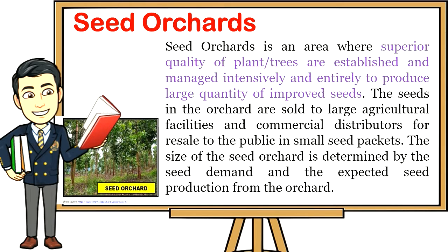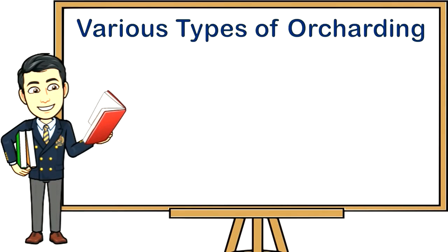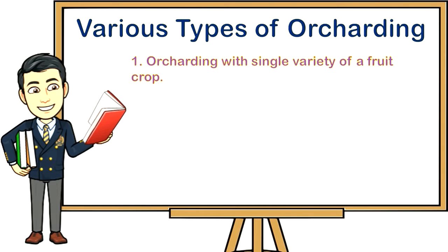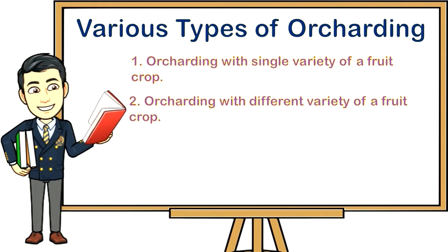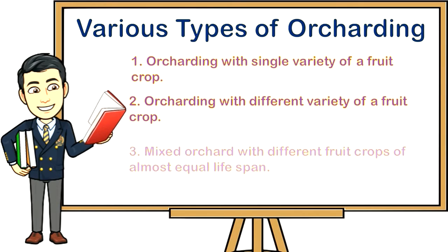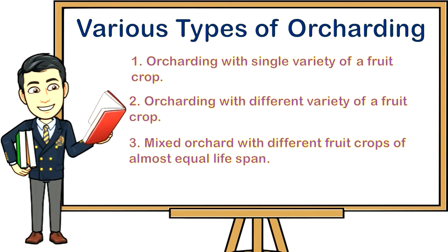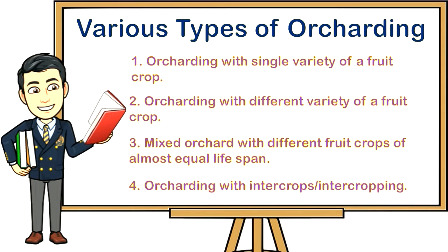Various types of orcharding: one, orcharding with a single variety of a fruit crop; two, orcharding with different varieties of a fruit crop; three, mixed orchard with different fruit crops of almost equal life span; four, orcharding with intercrops or intercropping.